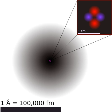Widely used definitions of atomic radius include: Van der Waals radius — in principle, half the minimum distance between the nuclei of two atoms of the element that are not bound to the same molecule. Ionic radius — the nominal radius of the ions of an element in a specific ionization state, deduced from the spacing of atomic nuclei in crystalline salts that include that ion. In principle, the spacing between two adjacent oppositely charged ions should equal the sum of their ionic radii.